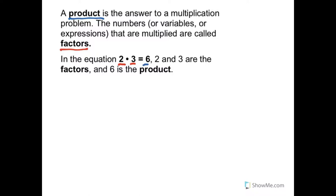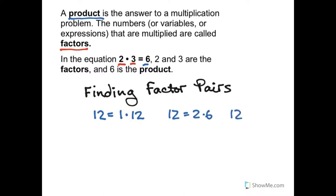We're going to start by finding factor pairs of numbers. So a number like 12 has three factor pairs. 1 times 12 is one pair, 2 times 6 is another pair, and 3 times 4 is another pair. This skill is going to be helpful for finding the greatest common factor of several numbers and for factoring quadratics.